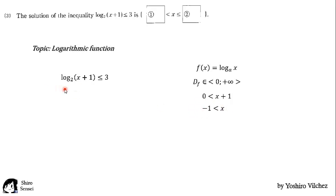Here we solve this inequality. x plus 1 is less than or equal to 2 cubed. 2 cubed is 8. And x is less than or equal to 7. We intersect this. And finally get that x is greater than minus 1 and less than or equal to 7.